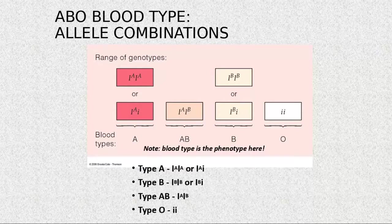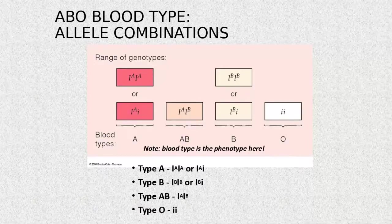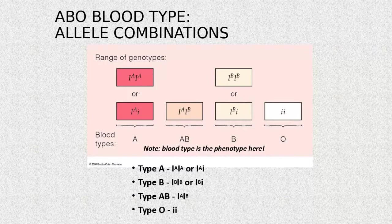The group O individual is considered a universal donor because red blood cells carry neither type A nor type B antigens, so they do not cause an immune response in the recipient.